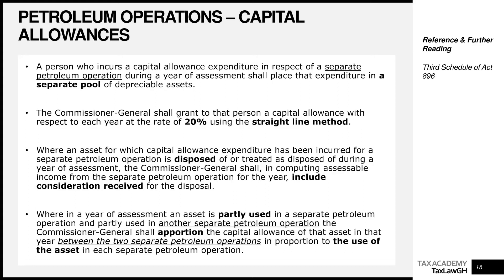From part one of the capital allowance series, I mentioned that petroleum operations and minerals and mining operations don't follow the general class 1, class 2, class 3, class 4, class 5 system. For petroleum operations, when you acquire a computer, throw it into one pool. When you buy a car, it goes into that same pool. Every single depreciable asset owned by a petroleum operation will be added to one pool and then granted capital allowance at a rate of 20%.